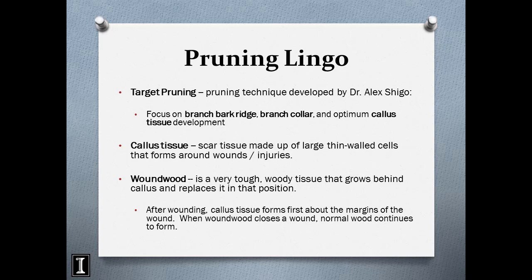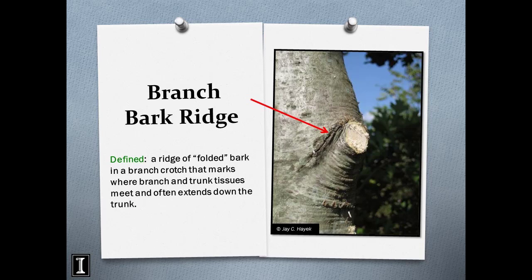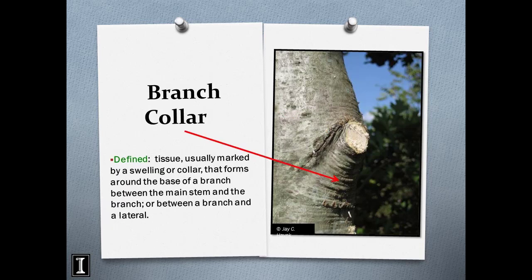Wound wood is different from callous tissue. It is a very tough, woody tissue that grows behind the callous and replaces it. After wounding — like when you make a pruning cut — callous tissue will develop first, and then the wound wood will replace it. Here we have a diagram of the branch bark ridge: it is this folded bark typically on the top side of a branch. You have to be able to identify it, because you don't want to cut into that branch bark ridge.